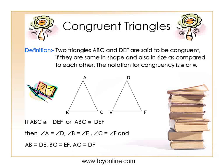As you see in the picture, there are two triangles: triangle ABC and triangle DEF. If these two triangles are congruent to each other, then angle A will be equal to angle D, angle B will be equal to angle E, and angle C will be equal to angle F. Similarly, their corresponding sides will be equal: side AB equals side DE, side AC equals side DF, and side BC equals side EF.